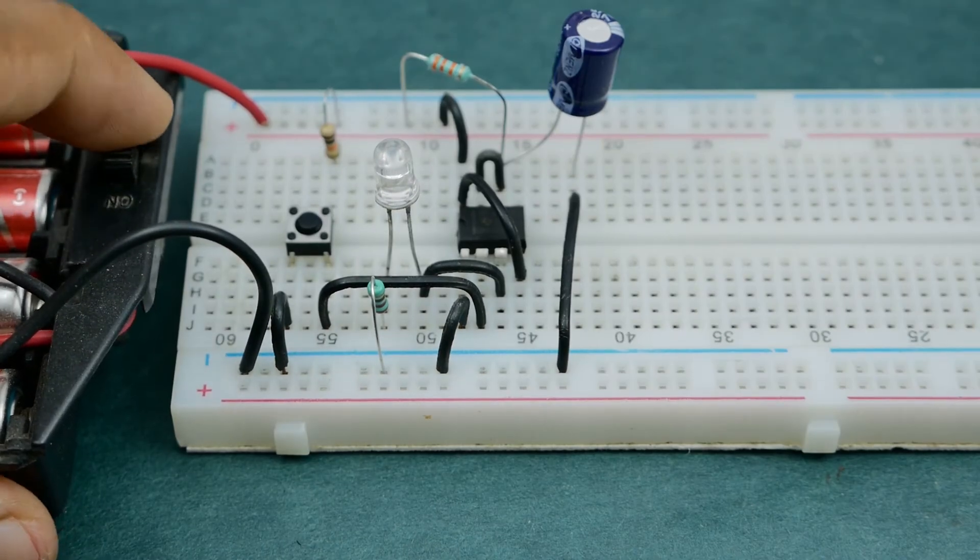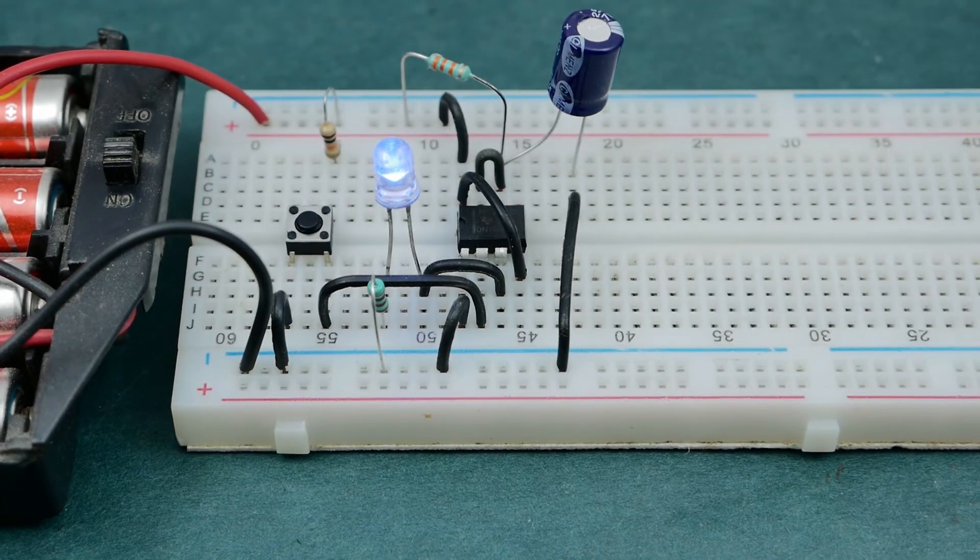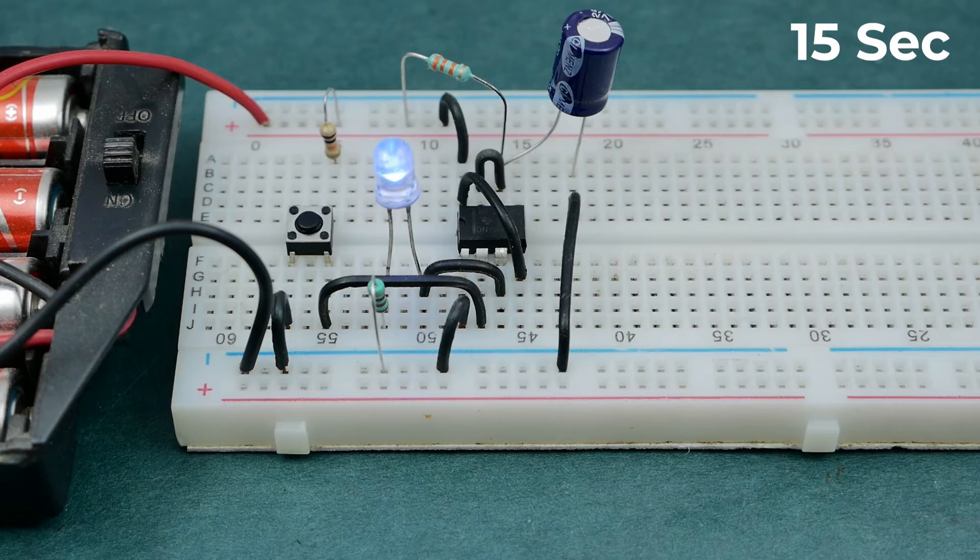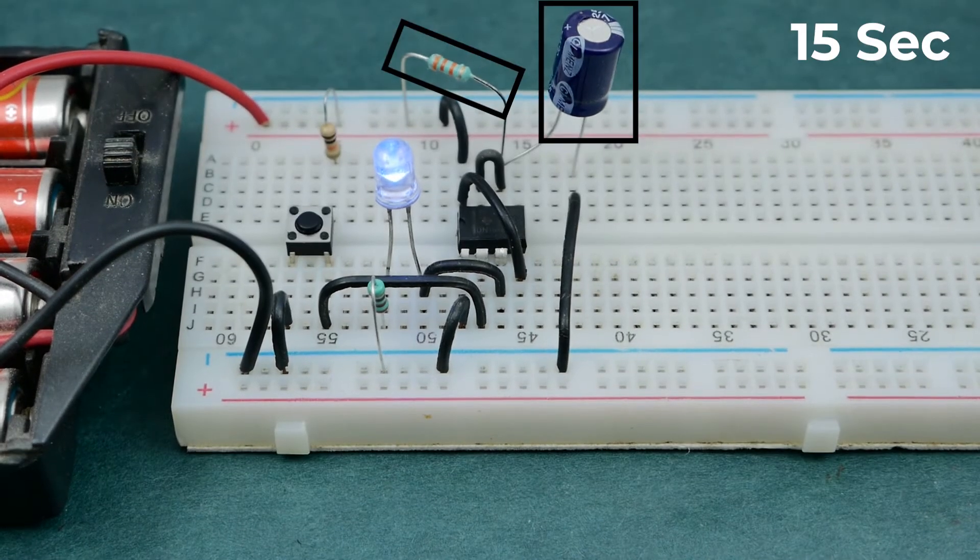Finally turn on the power supply and activate this automatic delay timer circuit. In this case it should turn off after approximately 15 seconds and it depends on the value of this resistor and capacitor you use.